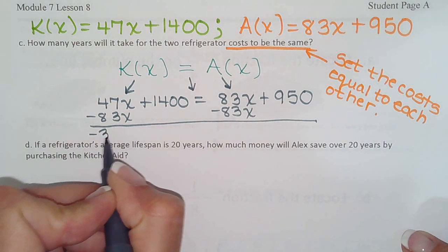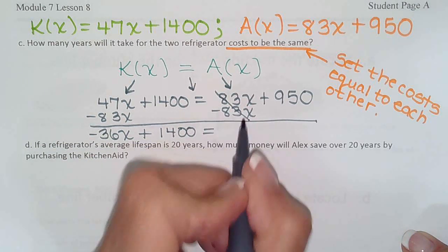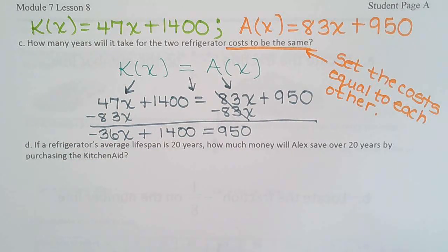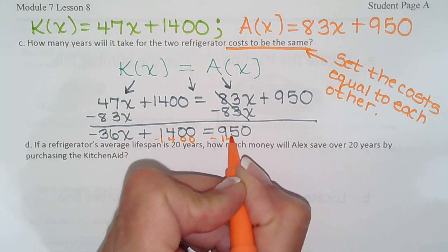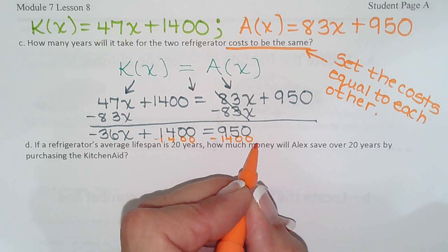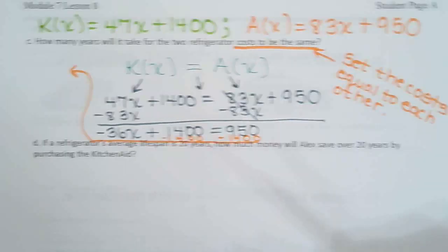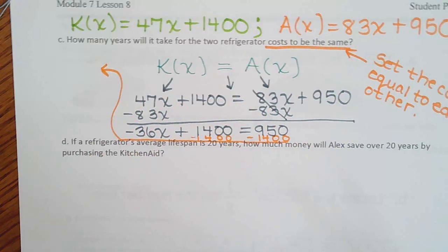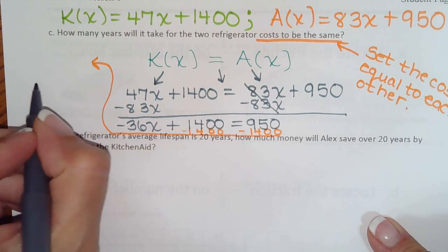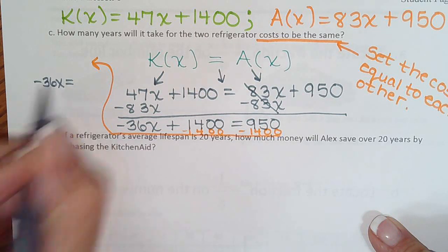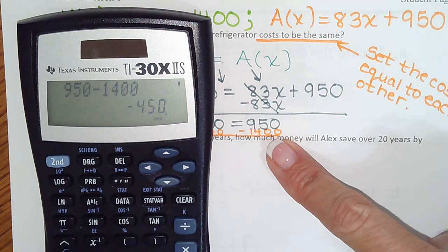So negative 36X plus 1,400 equals 950. So now we need to subtract minus 1,400 on both sides. And so that's going to leave us negative 36X equals 950 minus 1,400 which is negative 450.